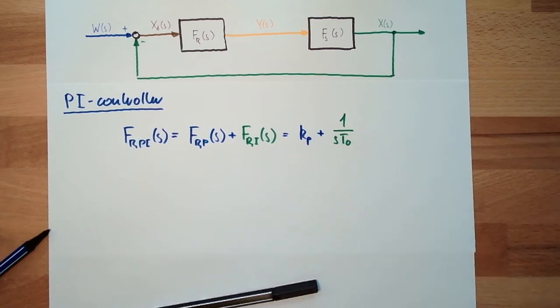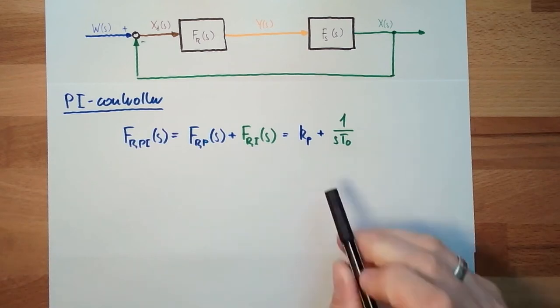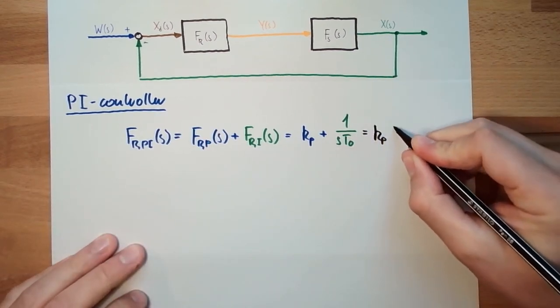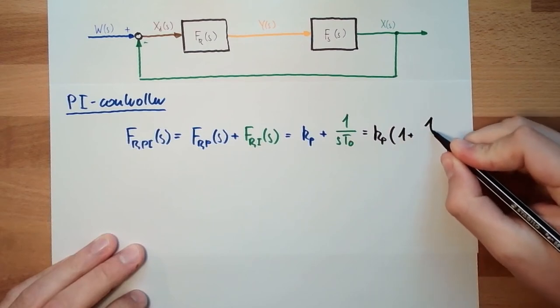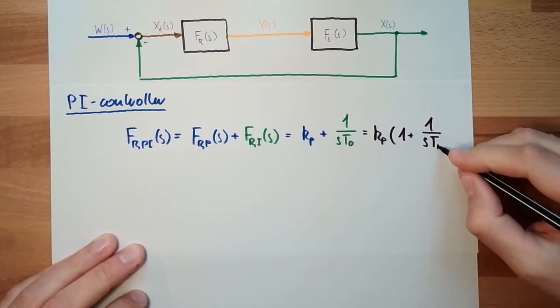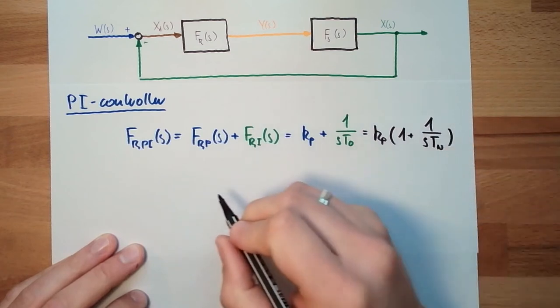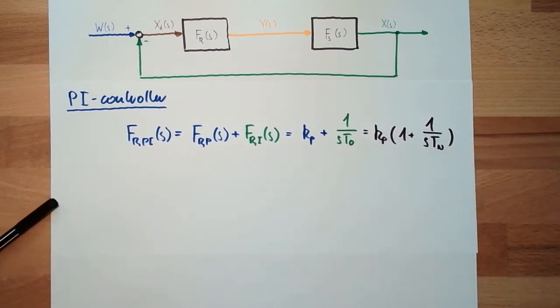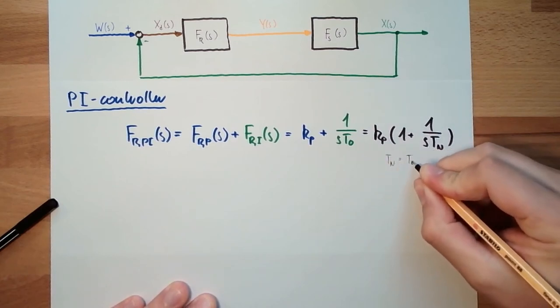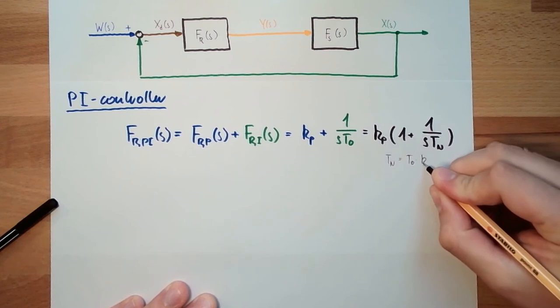And, of course, exactly when we talked about the PI element, we are going to get out K_P here. So, usually it is written K_P times 1 plus 1 divided by sT_N, and T_N was T_0 multiplied by K_P.